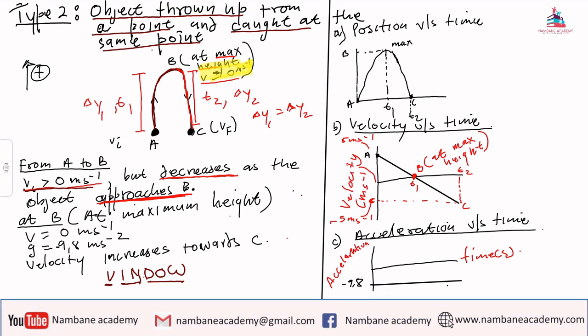So now we further say what happens at B, which is now the maximum height. At maximum height, v equals zero, g equals negative 9.8 meters per second squared, and velocity increases towards C.